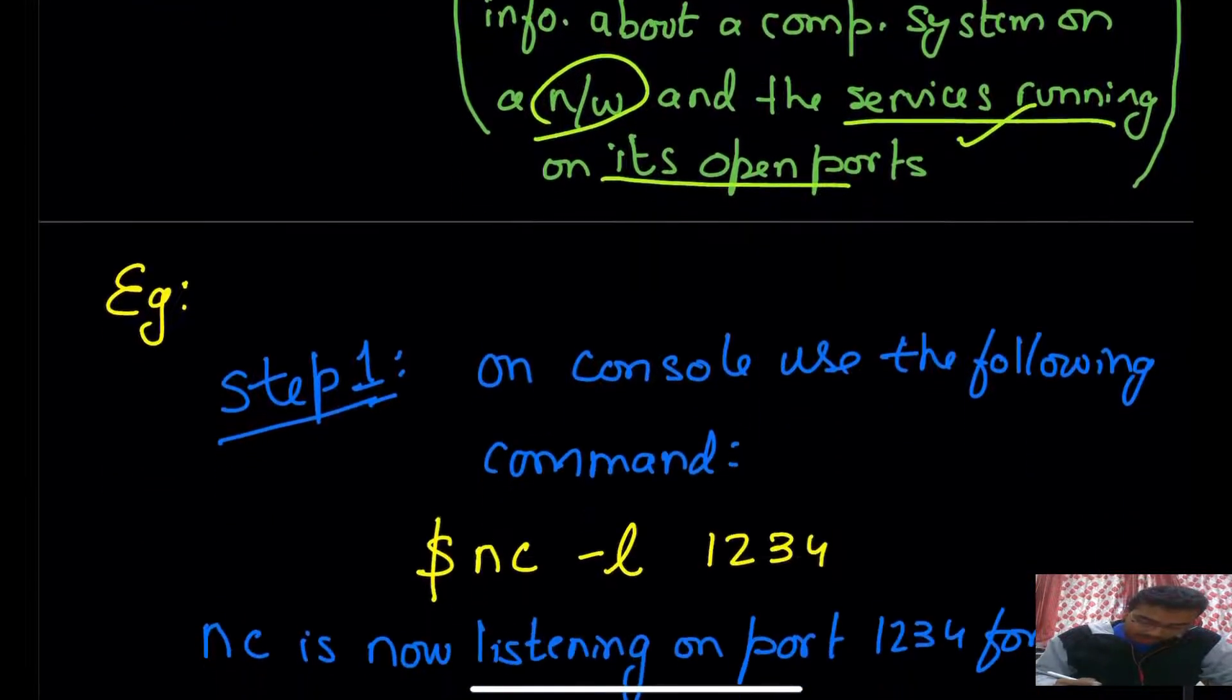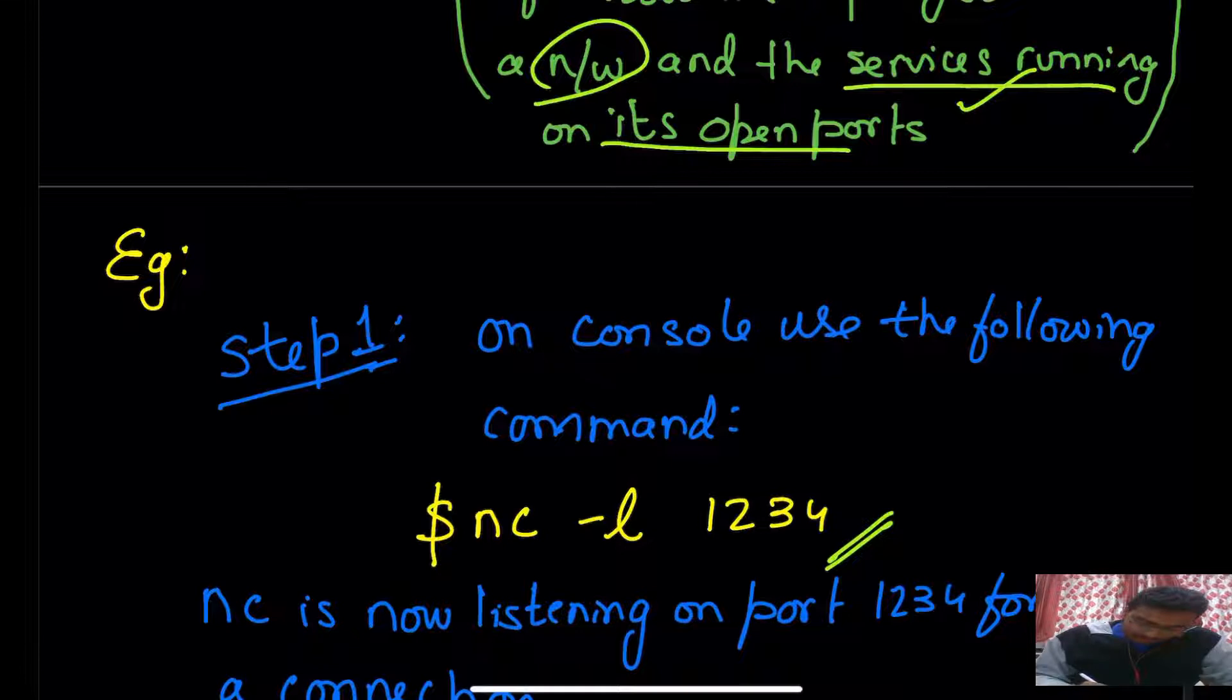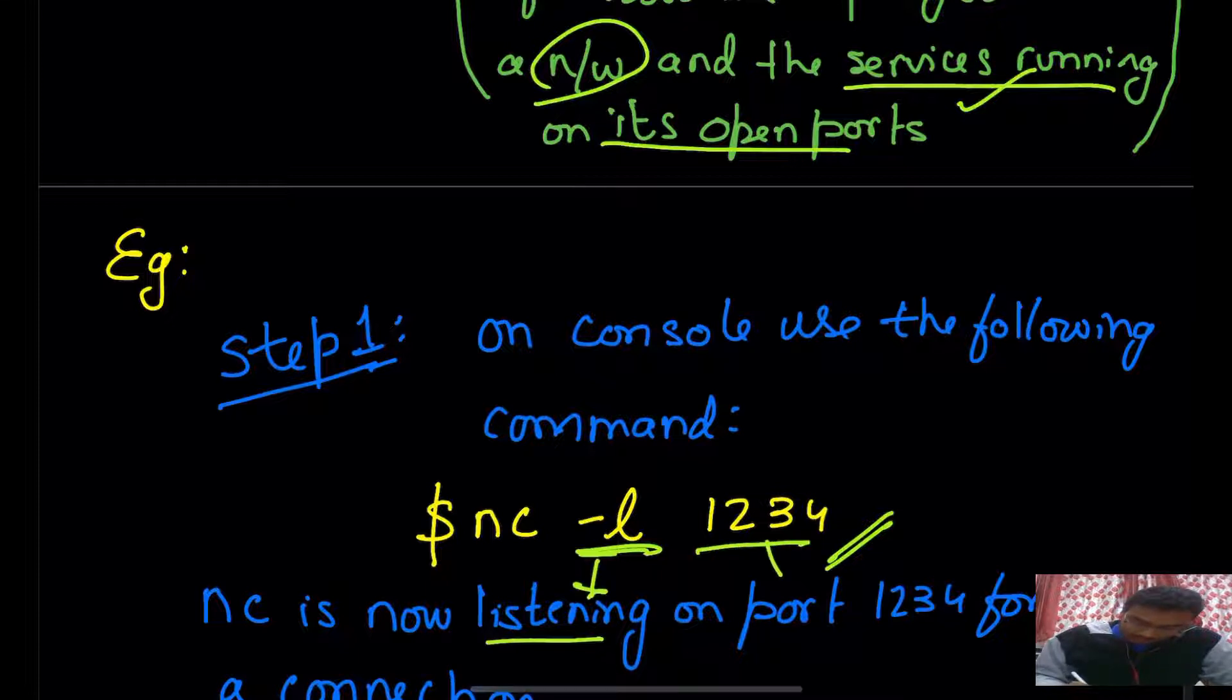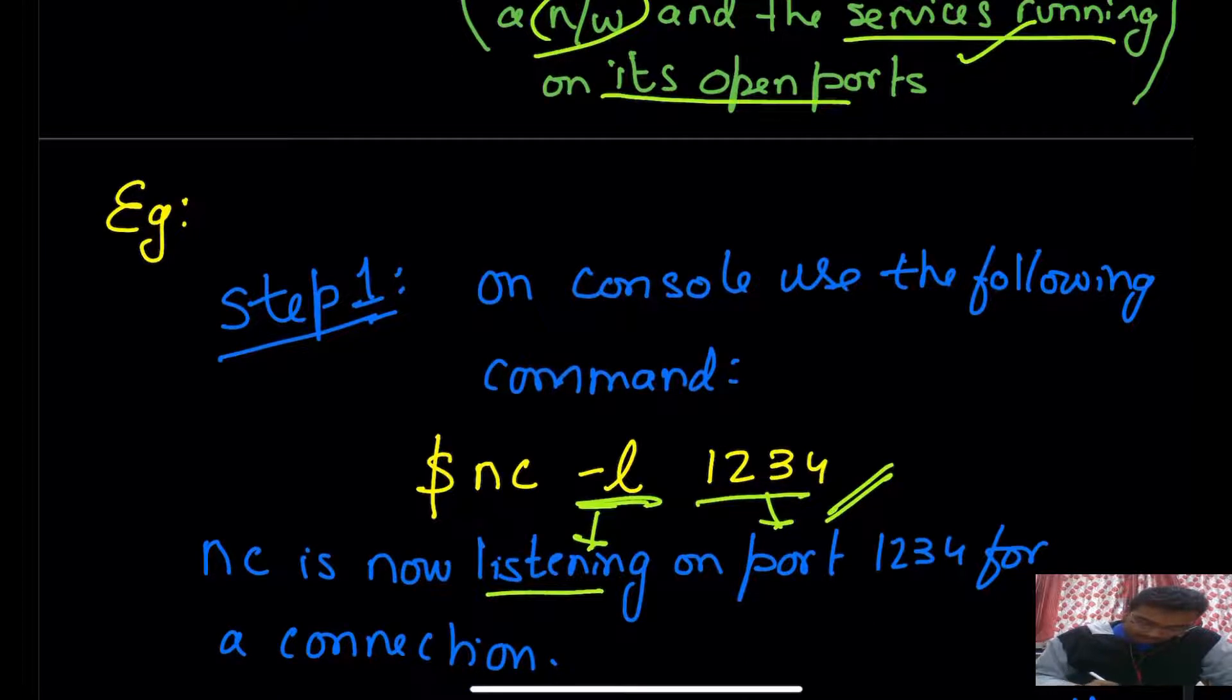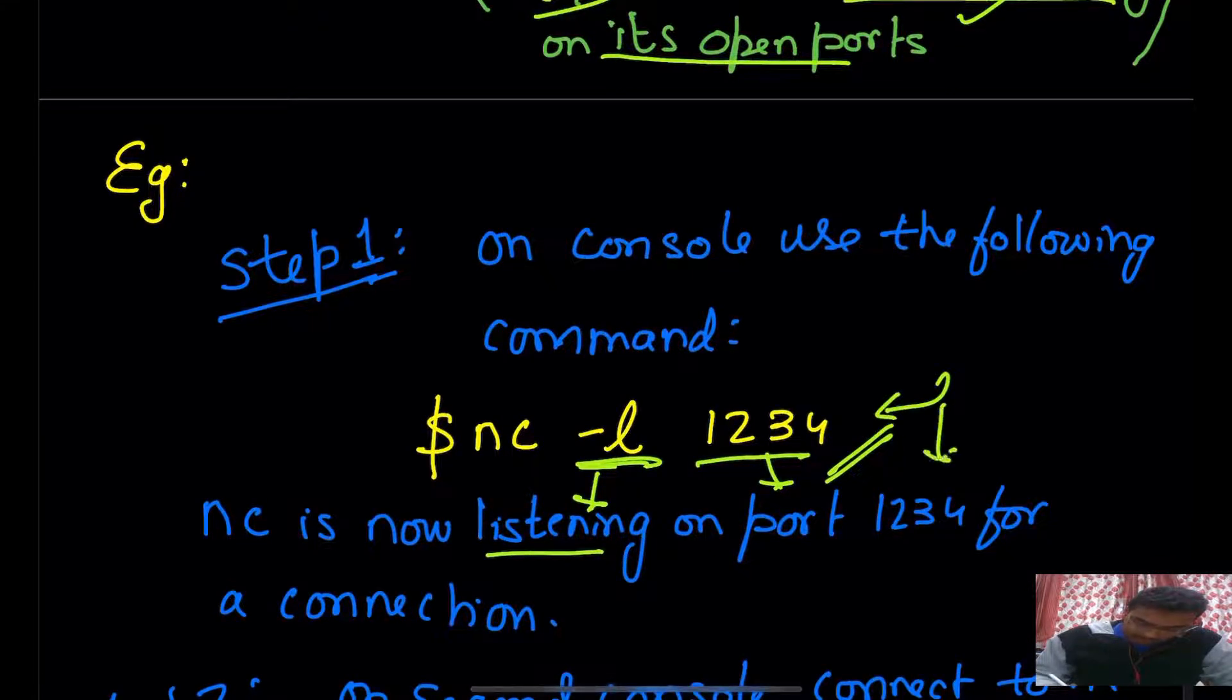How? Let us now see an example. Step one: on the console use the following command: nc -l 1234. L stands for listening and 1234 is the port number. NC is now listening on port 1234 for a connection. Once you run this command, this would be the result.